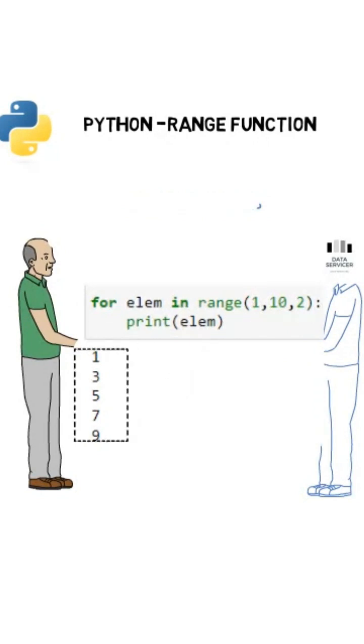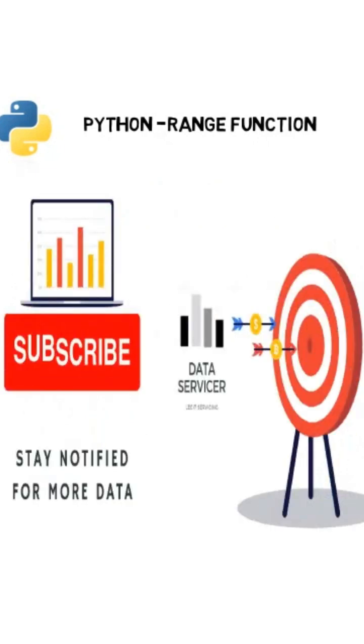2 is just the step index, not the even or odd number condition. For more shorts like this, stay notified and subscribe for more data. Thanks!